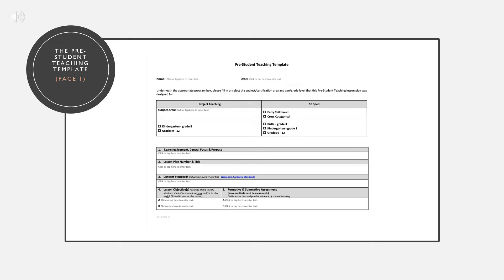To begin, fill in your name and the date that you taught the lesson. If you're a project teaching student, you'll enter your subject area and then choose either K-8 or 9-12 for the grade level of the lesson that was taught.